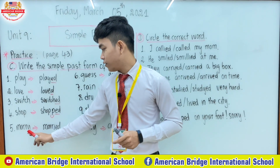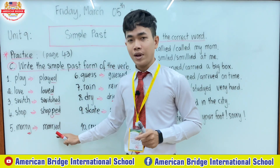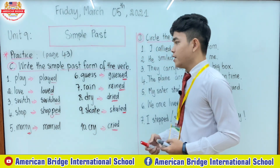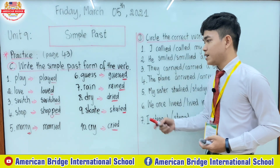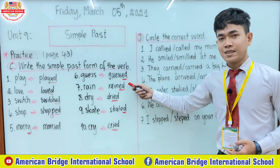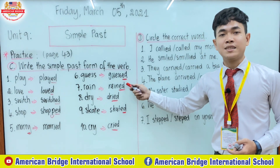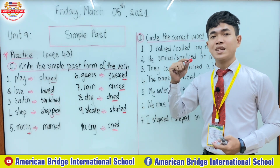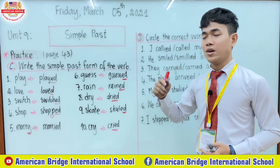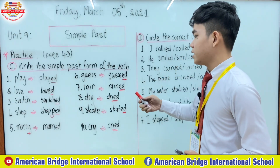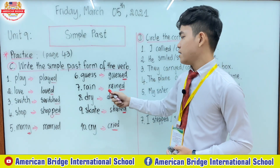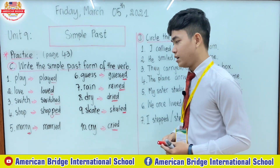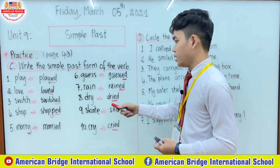Number five: 'married'. Easy. Number six: 'guessed'. The sound is just like th — 'guessed'. Number seven: 'rained'. Rained.